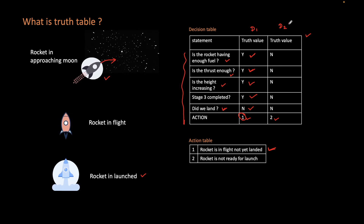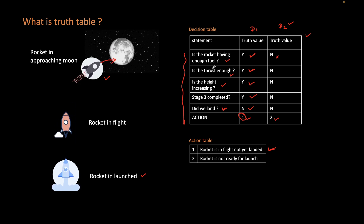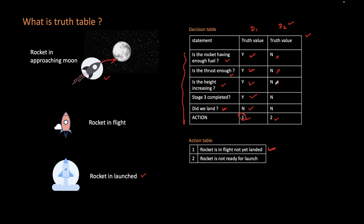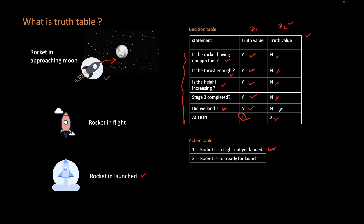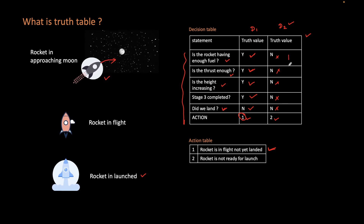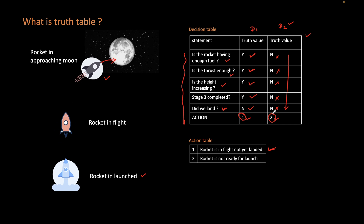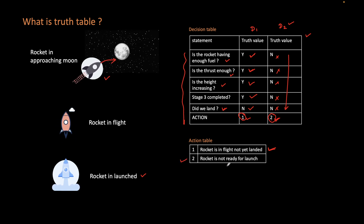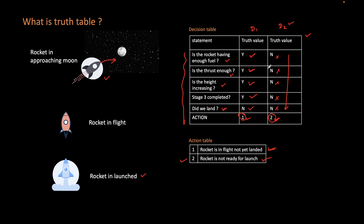For Decision 2: the rocket is not having enough fuel — no. The rocket is not having enough thrust — no. Is the height increasing? No, because the rocket is not moving up. Is stage 3 completed? Also no. So we are taking all negative conditions, and in this scenario we will take action 2. Correspondingly, it links to the action chart where it is stated that the rocket is not ready for launch.